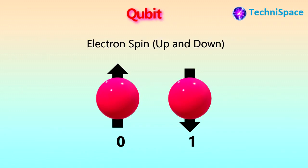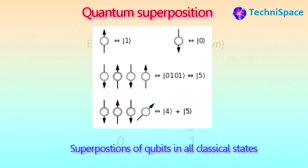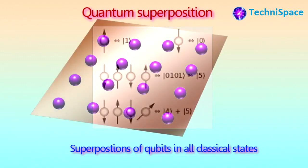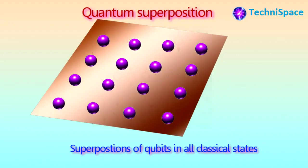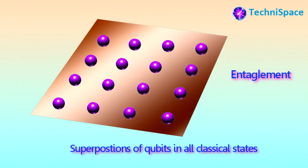Spin-up can be assumed as 0 and spin-down as 1 for easy identification. Due to superposition, these qubits can stay in both states at the same time. By using power, a photon's path can be guided to form qubits. By using light and magnetic fields, superposition, entanglement, and other quantum properties can be created.